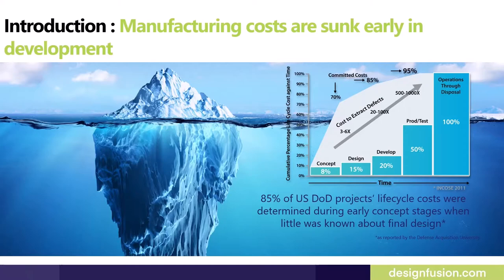Manufacturing cost is like an iceberg — there is more cost than what initially meets your eyes. Design decisions have a cumulative effect on your committed product development cost. That committed cost is higher during the initial stage of design iteration, and if there is some change later on, it will cost you more.